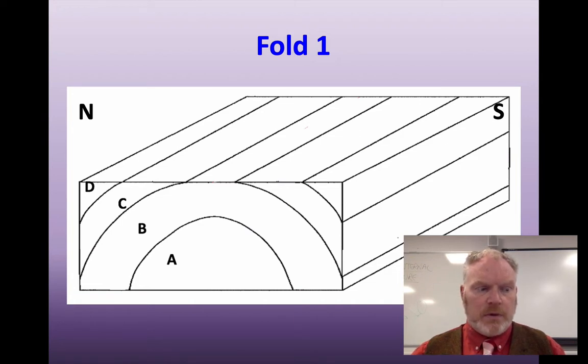If we think about the age of these beds, think about the law of superposition. Bed A must be the oldest. Bed D must be the youngest. So once you've coloured those in, I'd like to draw a line where the axis is. Remember, the axis is the middle of the fold where the hinge is. Do that on the top surface and on the cross-sectional surface. On the top surface then, can you draw some dip arrows? Remember, dip is the direction that the beds go down. So what would that look like on the top surface? Can you point in the direction that those beds would actually go down?